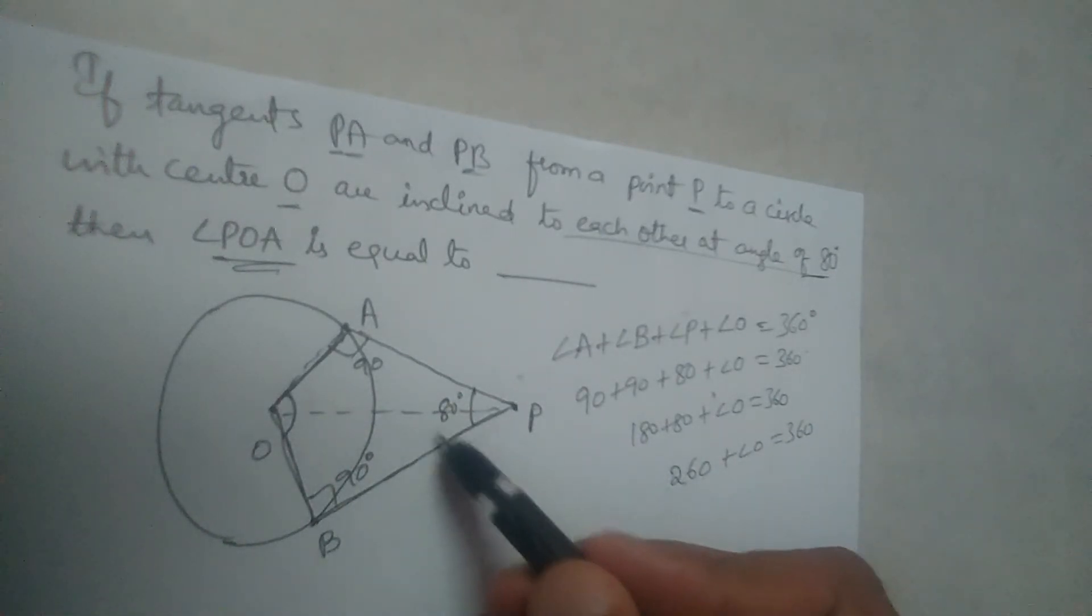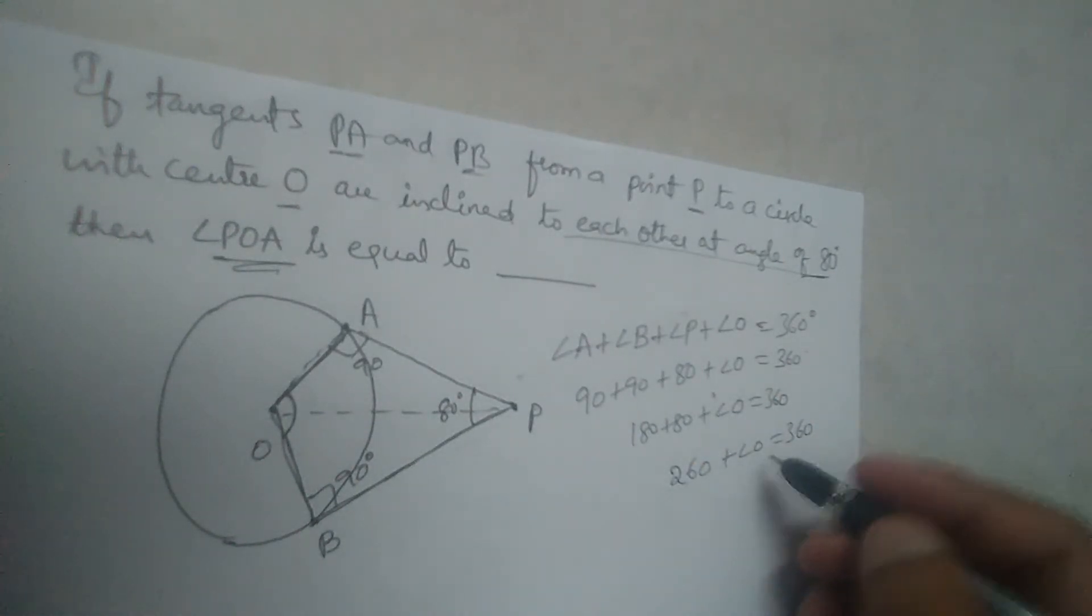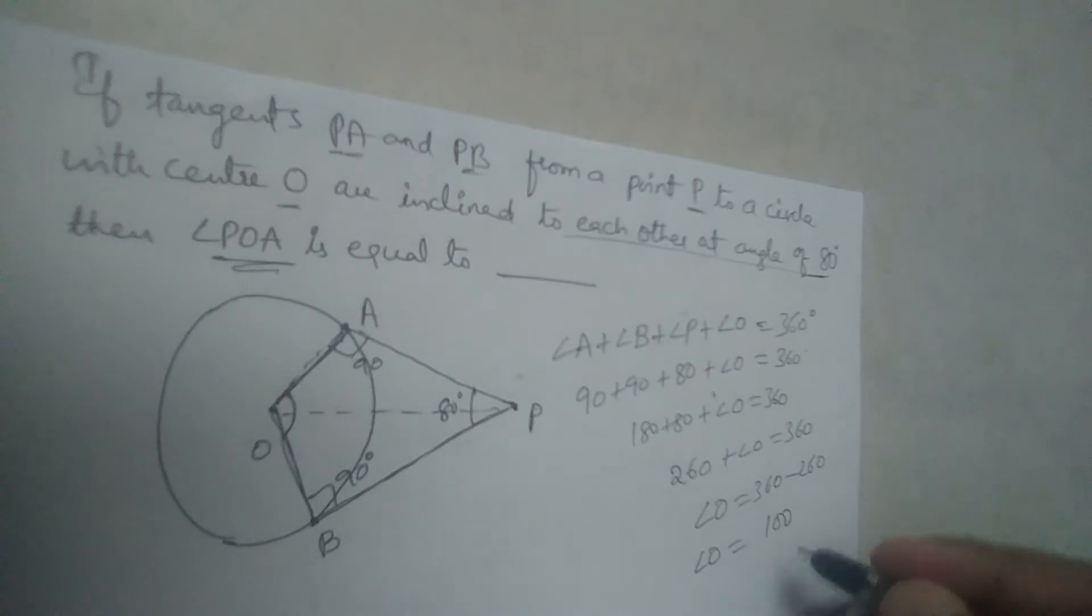90, 90, 180, 180 and 80 is 360. So angle O will be 360 minus 260. It will be 100, it will be 100. Angle O is 100.